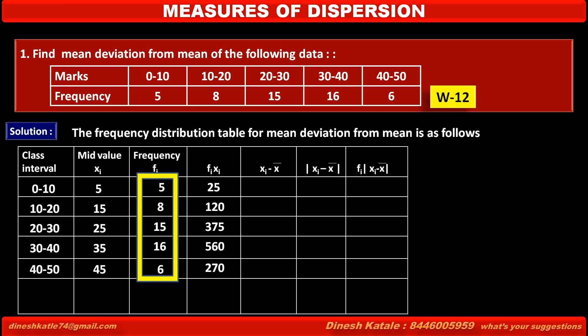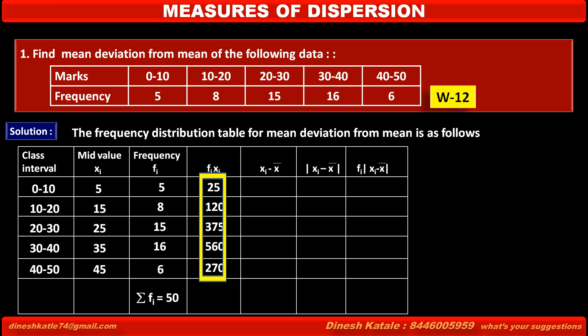The sum of all frequencies in this column, denoted by Σfi, after addition gives us 50. The sum of all products fi·xi in this column, denoted by Σfi·xi, after addition gives us 1350.